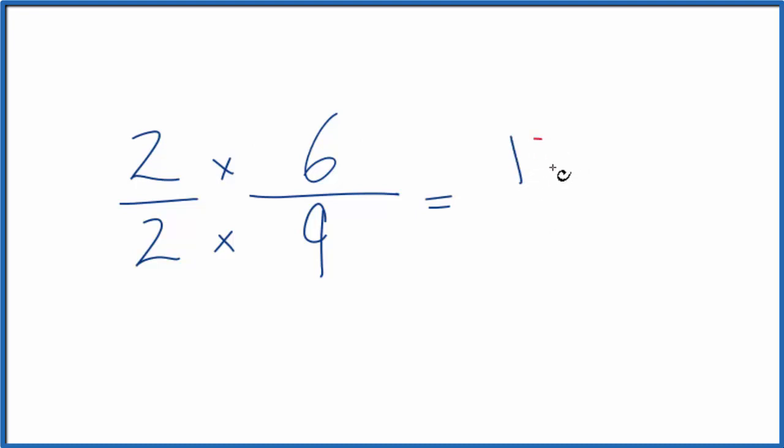But 2 times 6 is 12, 2 times 9 is 18. And now we have an equivalent fraction to 6 ninths: 12 over 18.